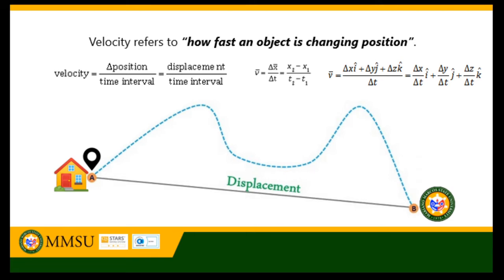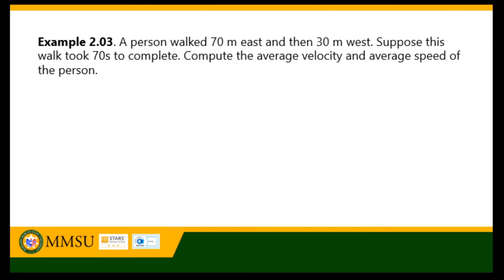Velocity can also be stated in unit vector form. In velocity, it only considers the displacement between two points, unlike speed, which considers the total distance. For instance, a person walked 70 meters east and then 30 meters west. Suppose this walk took 70 seconds to complete — compute the average velocity and average speed of the person.